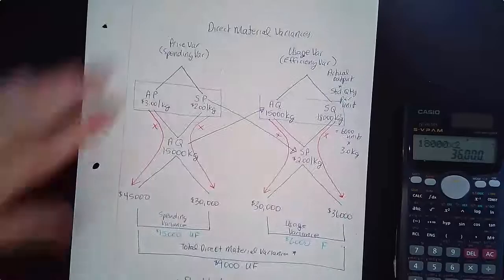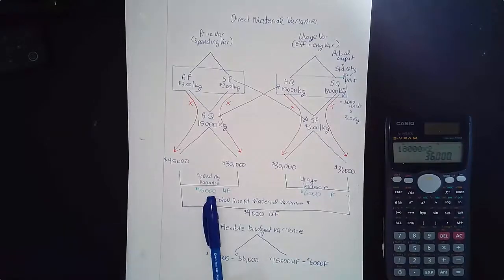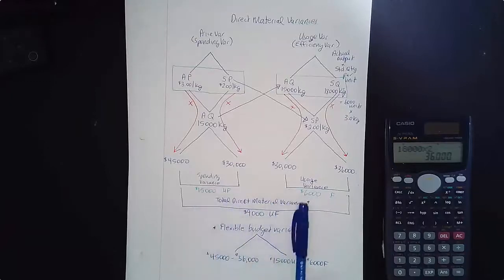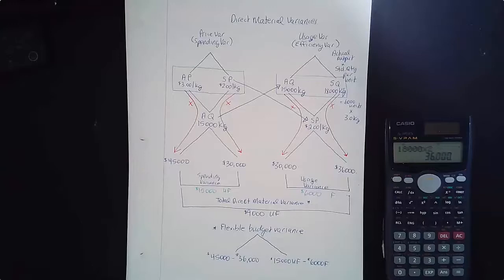Let me pan out so you can see the whole sheet. This is the diamond approach to calculating direct material variances. Remember what we're calculating: did we spend more or less than expected, and did we use more or less than expected? In this case, we spent too much but used a lot less. Don't forget there are two methods to calculate the total direct material variance. That's direct material variances using the diamond approach.